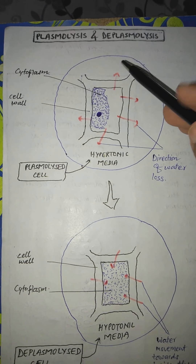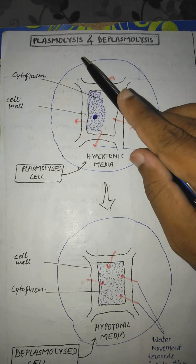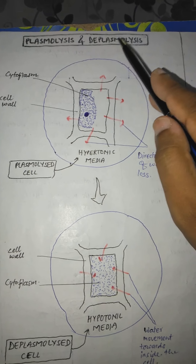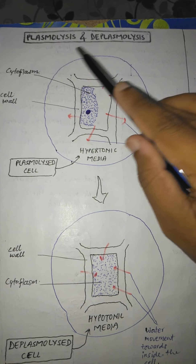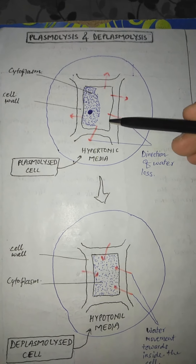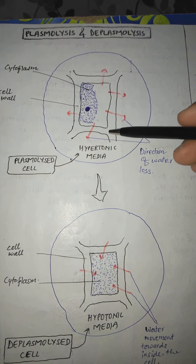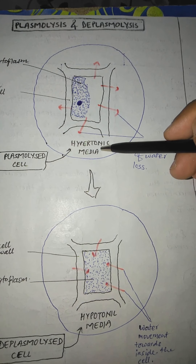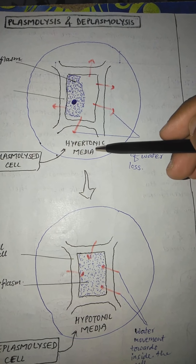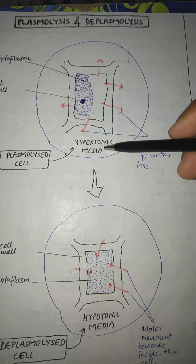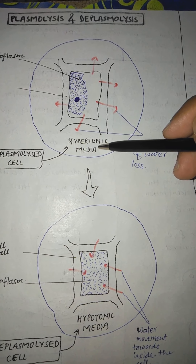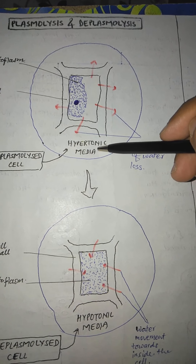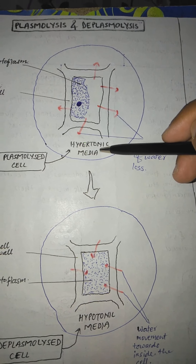Hello students, today we are going to discuss two different terms: plasmolysis and deplasmolysis. When particular kinds of plant cells are placed into a hypertonic medium — hypertonic medium being a kind of solution that consists of a higher concentration as compared to the concentration of cell sap.